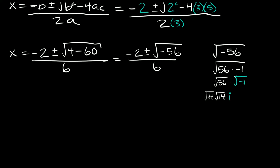So if we simplify this a little bit more, the square root of 4 is just equal to 2. The square root of 14 — we could break that down into 7 times 2, but that's not really going to help us, so you can just leave it as the square root of 14. And then we still have our i. So the square root of negative 56 is equal to 2 root 14 i.